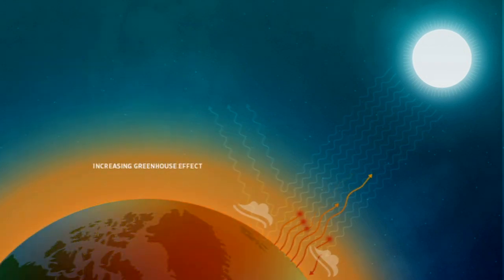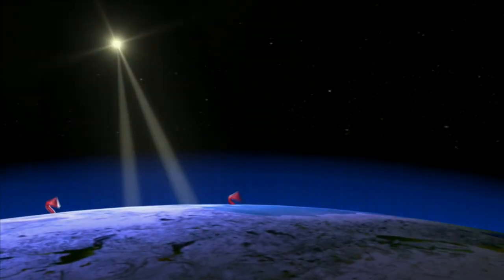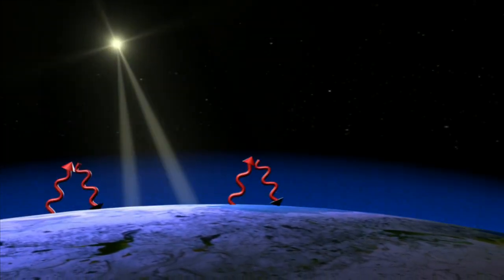In the absence of greenhouse gases, this heat would simply escape to space, and the planet's average surface temperature would be well below freezing. But greenhouse gases absorb and redirect some of this energy downward, keeping heat near the surface of Earth.